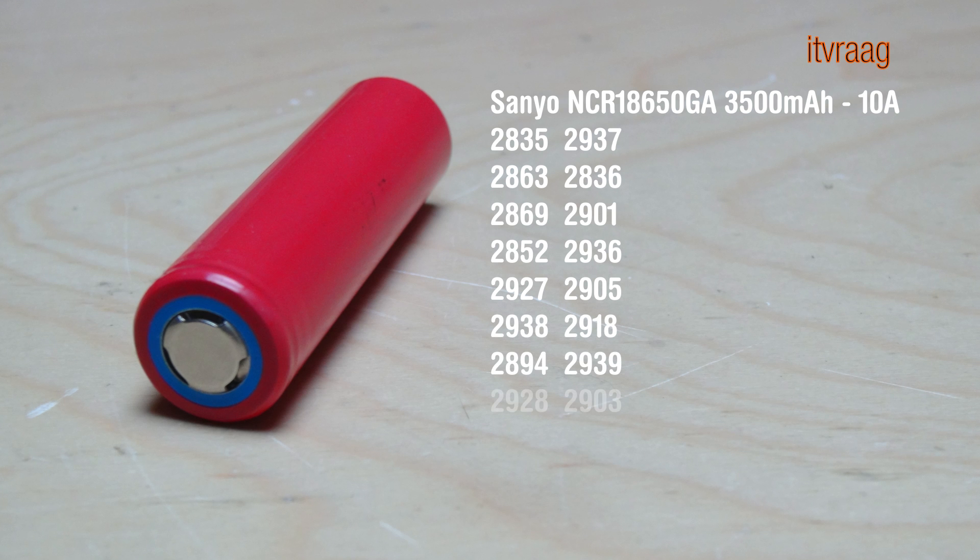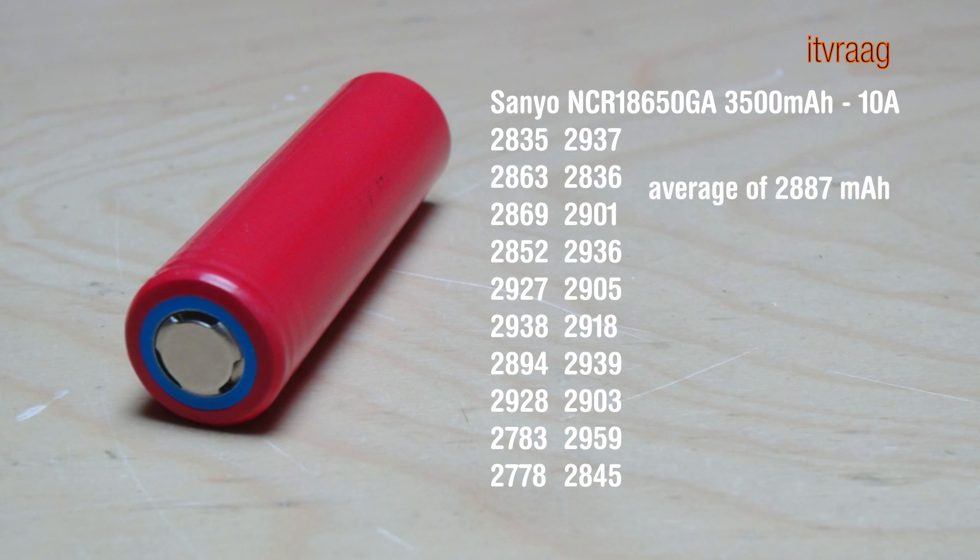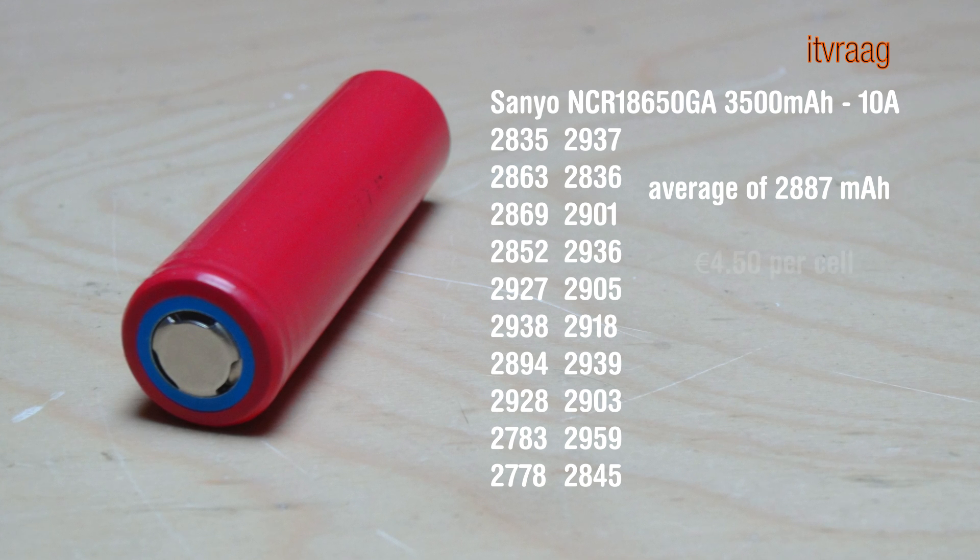The 20 cells from Sanyo showed an average capacity of 2887 mAh while costing about 4.5 euro per cell.